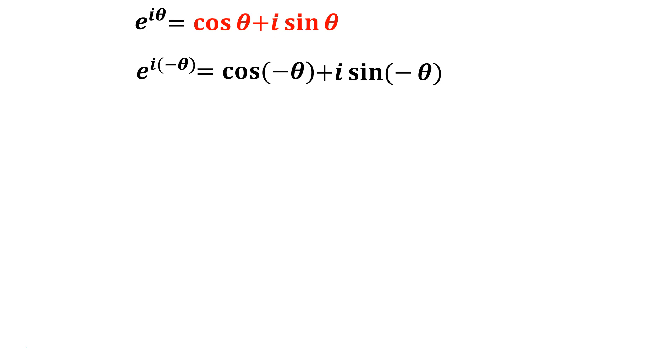Let's apply a couple basic rules about sines and cosines. Cosine is even, that means cosine of θ is the same as cosine of negative θ. Sine is an odd function, so you can pull that negative outside and it becomes minus i sin θ for that reason.